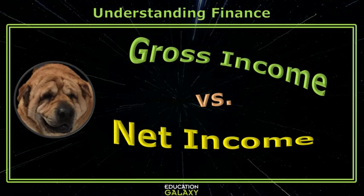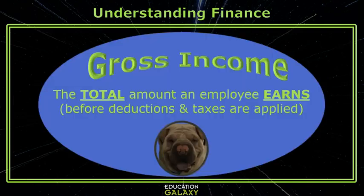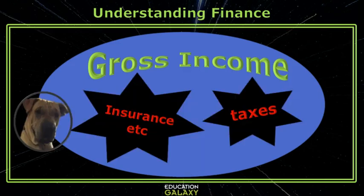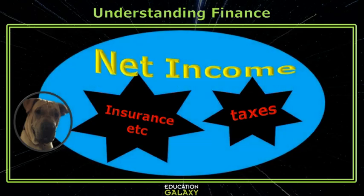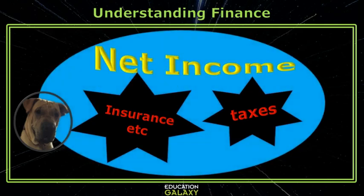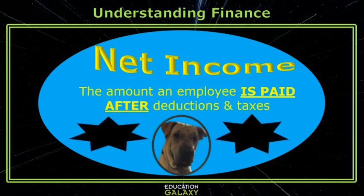Can you now explain the difference between gross income and net income? Of course. Gross income is the total amount an employee earns before deductions and taxes are applied. But then things like taxes and insurance are deducted from the gross income, and what you have left is net income. So net income is the amount an employee is paid after deductions and taxes are taken out.